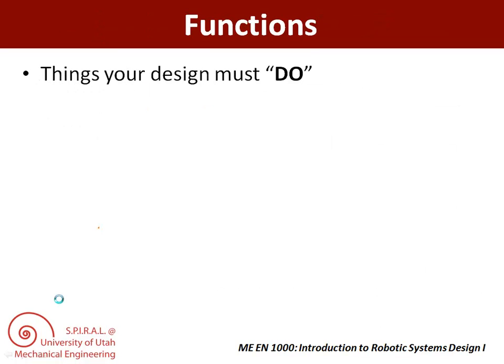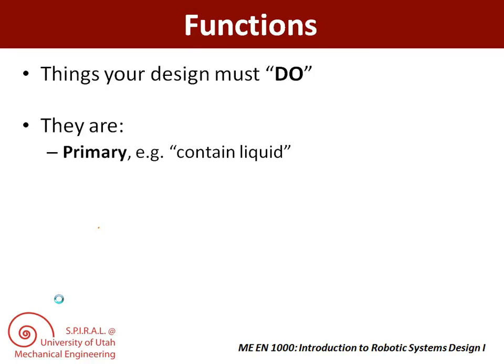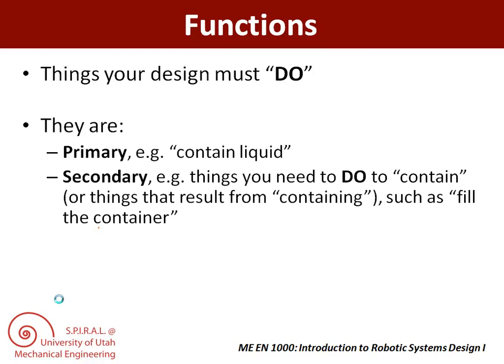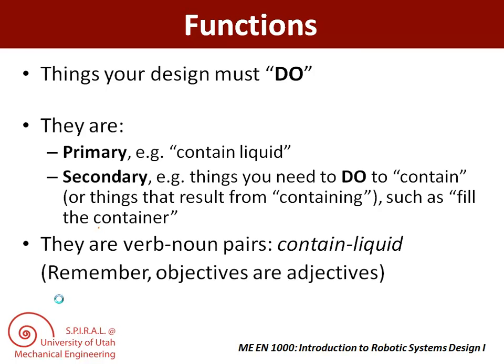Lastly, functions are things your design must do. These can be primary, which are more general — like 'contain liquid' for the beverage container example — or secondary, which are more specific, being things you need to do in order to achieve the more general functions, such as 'fill the container' so that you can contain the liquid. Functions are verb-noun pairs, such as 'contain liquid' or 'fill container.' Remember, objectives are adjectives. If you're thinking of things that are adjectives, those are going to be objectives. If you're thinking about things your design has to do, phrase those as verb-noun pairs — those are your functions.